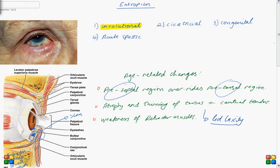Hopefully in the next video I'd like to discuss cicatricial entropion, which is entropion as a result of scarring on the eyelid region. So thank you very much for watching.